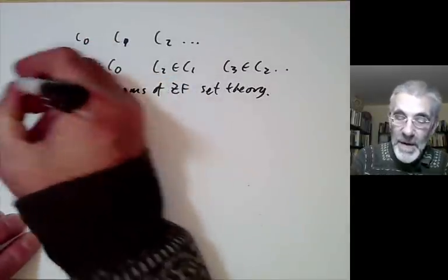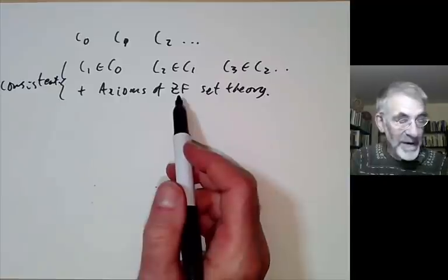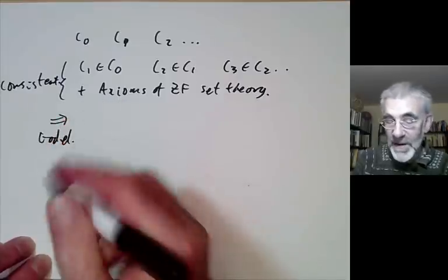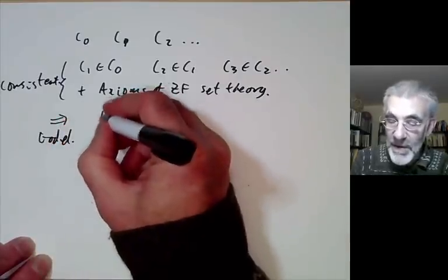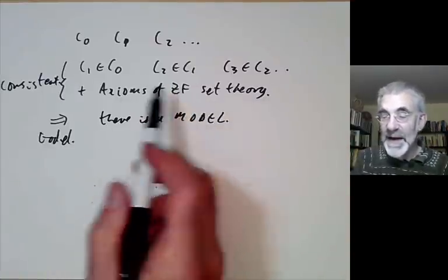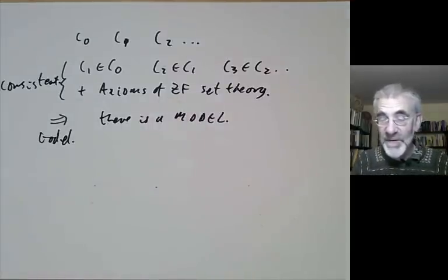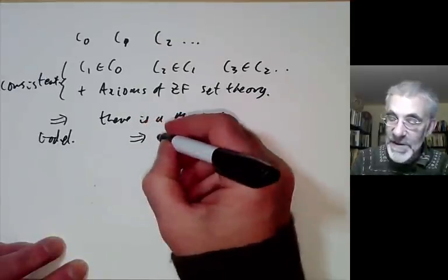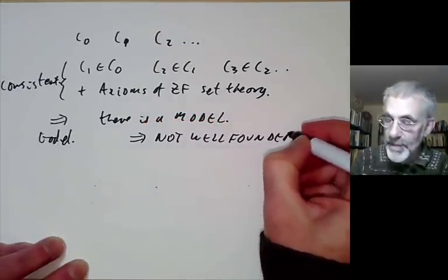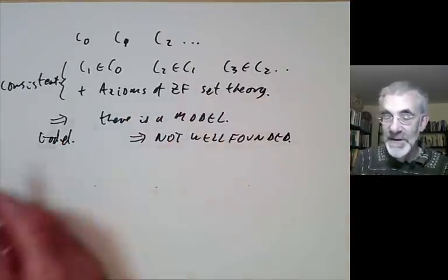So these axioms are consistent — assuming ZF is consistent — which means by Gödel's completeness theorem that there is a model. In other words, we can find a set together with constants satisfying these conditions and the usual axioms of ZF. Well, this model is obviously not well-founded because it has a chain of elements c0, c1, c2, ... satisfying these conditions.